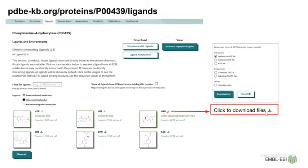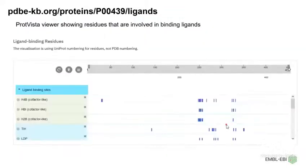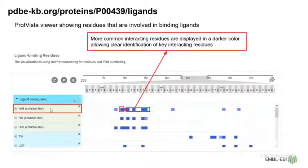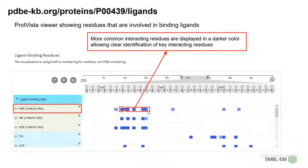You can click on the download button in order to download data for this particular ligand. The next part of this section is ligand binding residues, which is shown in the Protvista viewer and shows you the residues which are involved in binding. This view can help you identify the commonly interacting residues.